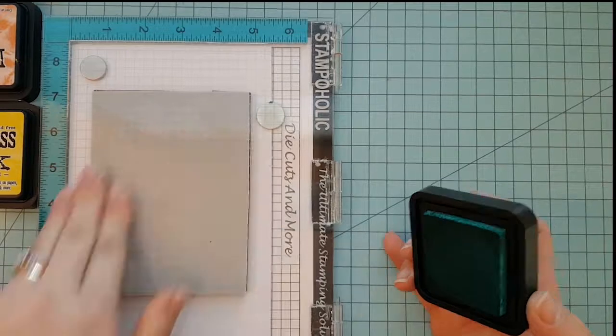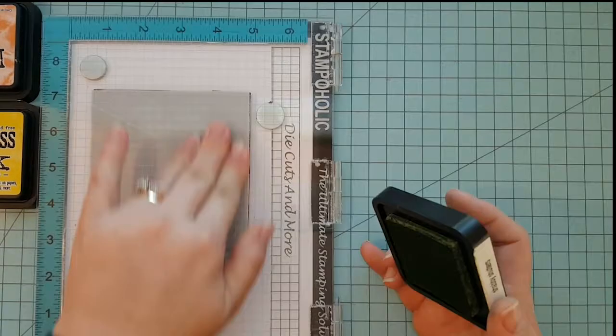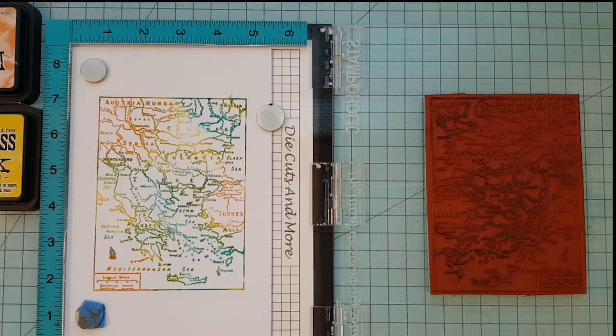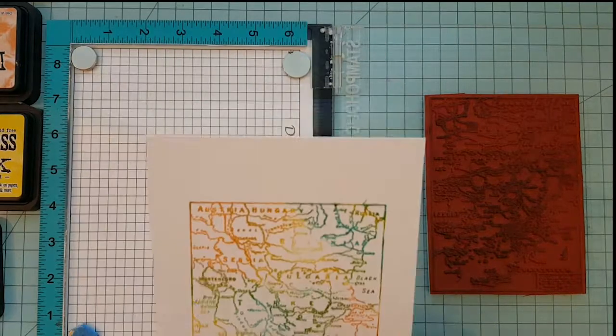But as you'll see, this is a very simple technique. You're just randomly laying color down, and you just keep adding it until you have the whole image stamped.